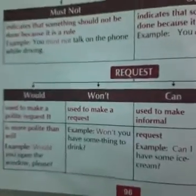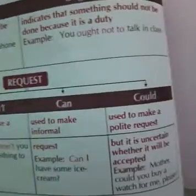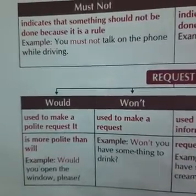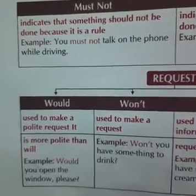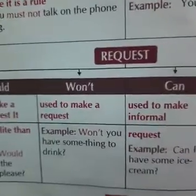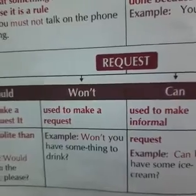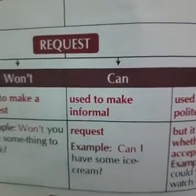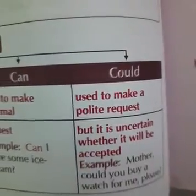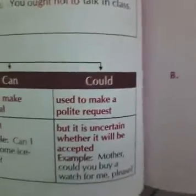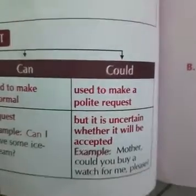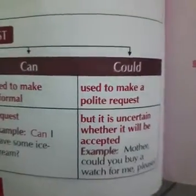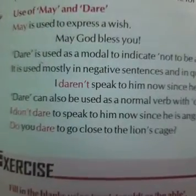When we are requesting something, we use would, won't, can, and could. Would is used to make a polite request and is more polite than will: 'Would you open the window, please?' Won't is used to make a request: 'Won't you have something to drink?' Can is used to make an informal request: 'Can I have some ice cream?' Could is used to make a polite request, but it is uncertain whether it will be accepted: 'Mother, could you buy a watch for me, please?'